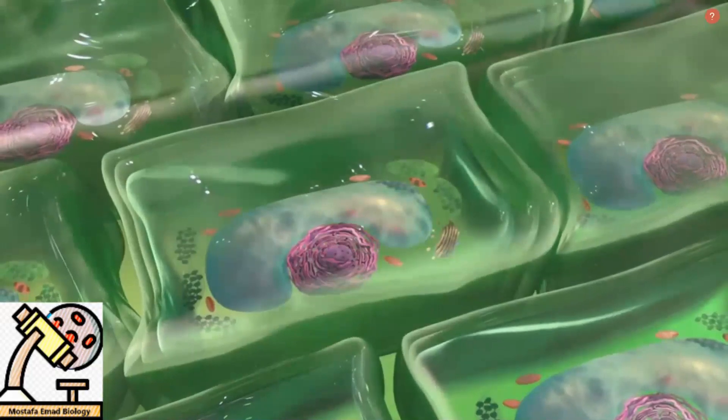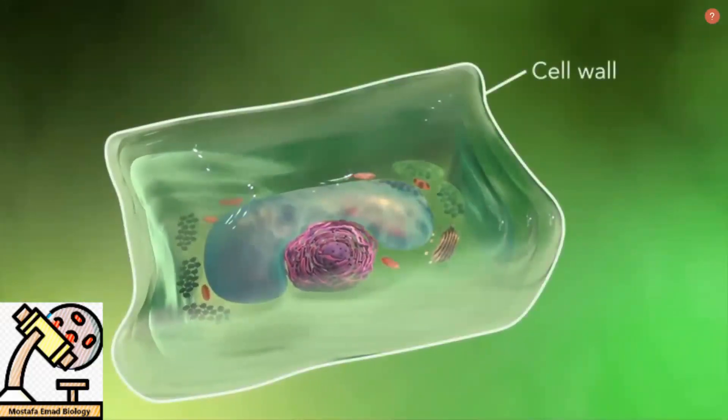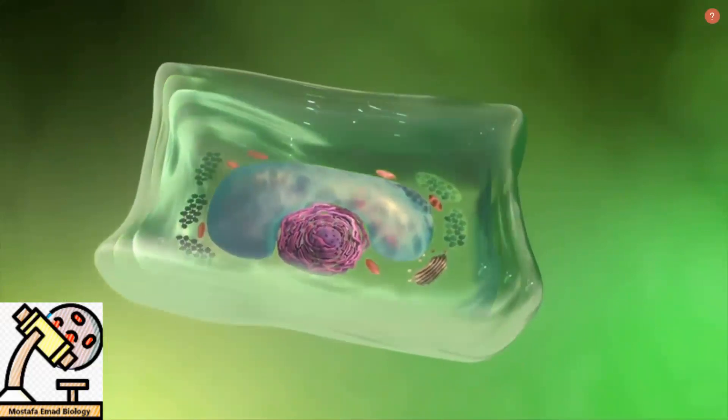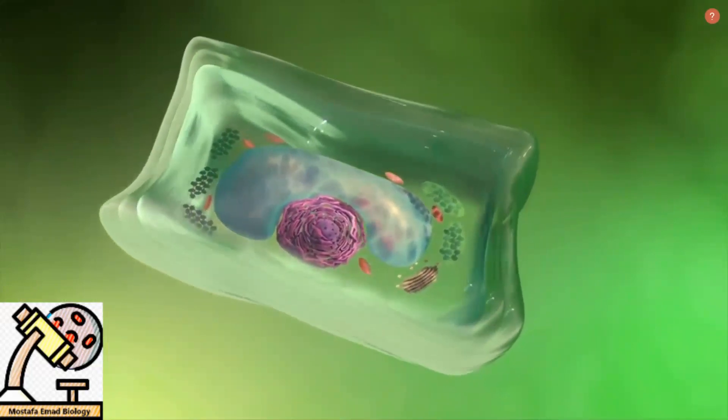Plant cells also have a cell wall outside their cell membranes that shape, support, and protect the plant cell. Animal cells never have a cell wall.